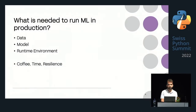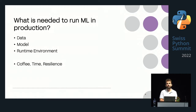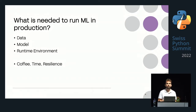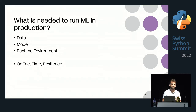To make a machine learning project go into production, you need data — that's the first thing. You need a model — that's the second. And then you need a runtime environment. I prepared two Python notebooks to illustrate my views. Of course, you also need coffee time and resilience, and I think resilience is one of the hardest parts — not the coffee, the resilience.